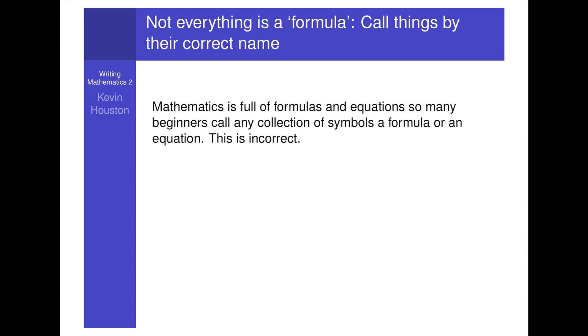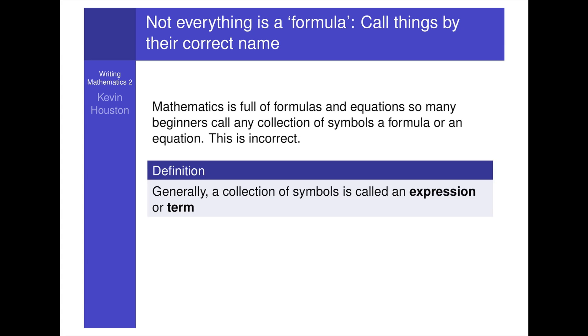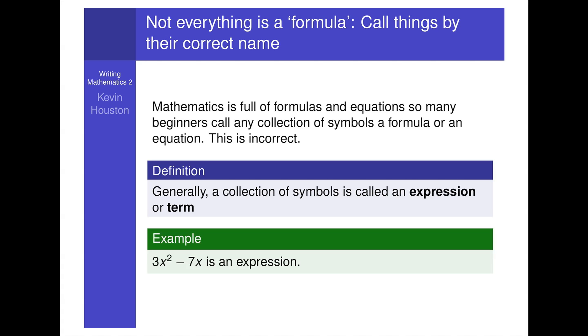Mathematics is full of formulas and equations so many beginners call any collection of symbols a formula or an equation. This is incorrect. Generally a collection of symbols is called an expression or term. For example, 3x squared minus 7x is an expression. It is not a formula or an equation.